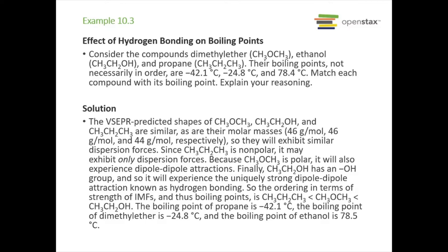Let's look at an example. Consider the compounds dimethyl ether (CH3OCH3), ethanol (CH3CH2OH), and propane (CH3CH2CH3). Their boiling points, not necessarily in order, are negative 42.1, negative 24.8, and 78.4 degrees Celsius. Match each compound with its boiling point and explain your reasoning.